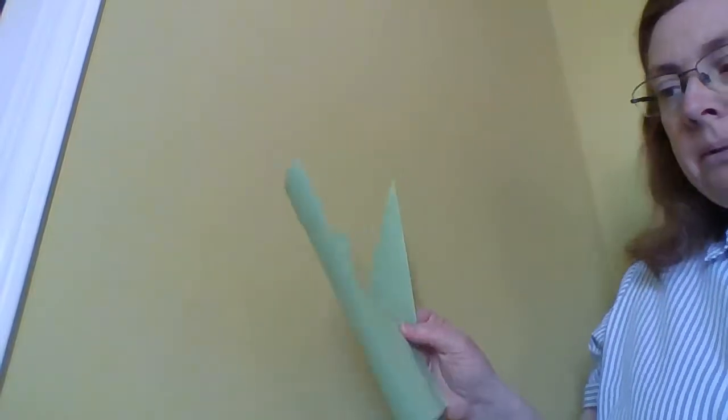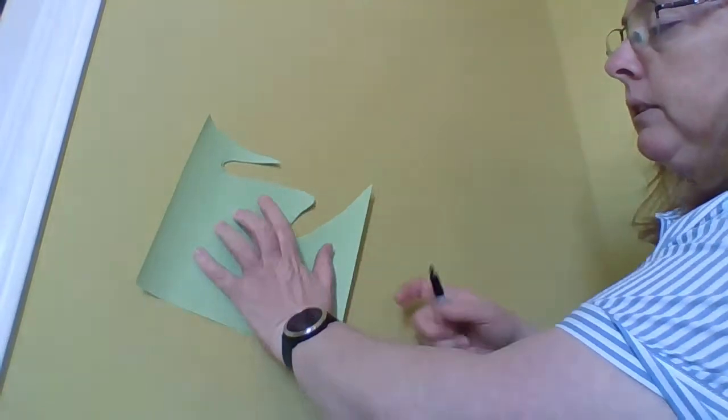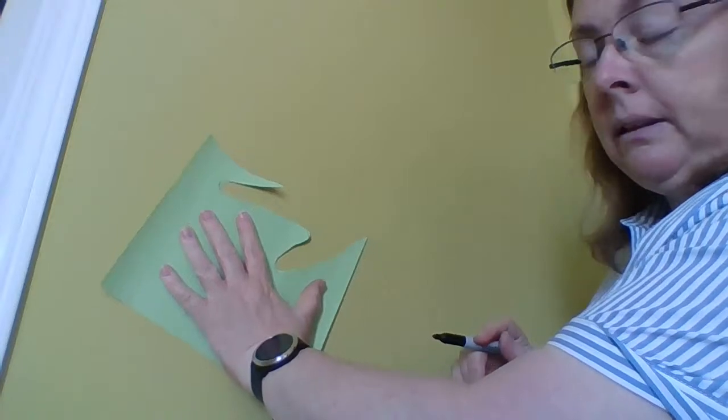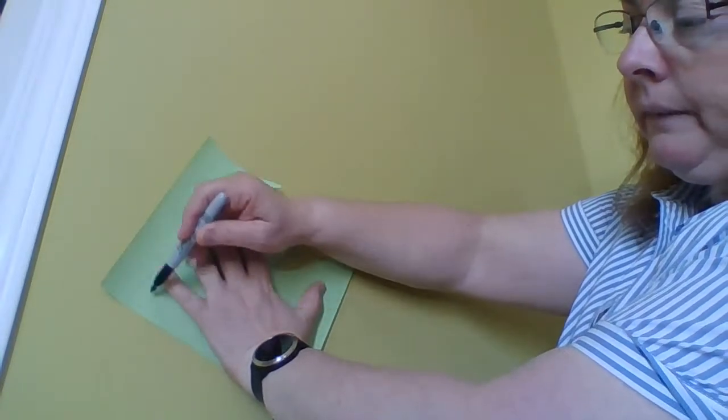Step one is you are going to trace your hand. So I've got my paper here. Remember, same as in class, I'm using my marker so you guys can see it. When you guys do it, start off with pencil and then you can outline it with marker if you like that, or you can just cut it out. So I'm going to put my hand on my green piece of paper and then I'm going to go around and trace it.